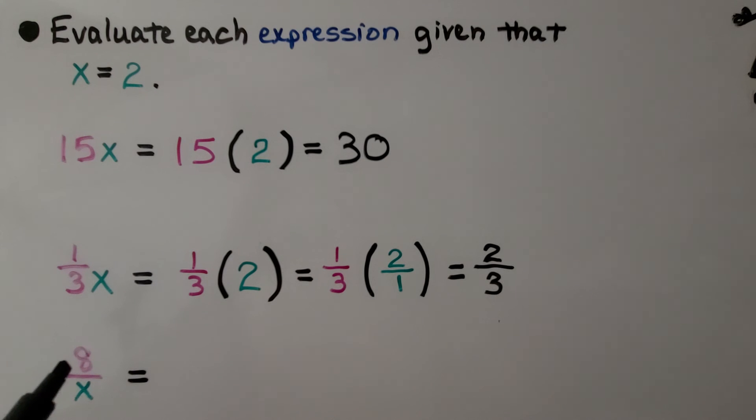Here we have 8 divided by x. We substitute the 2. 8 divided by 2 is equal to 4. We've evaluated each expression given that x is equal to 2.